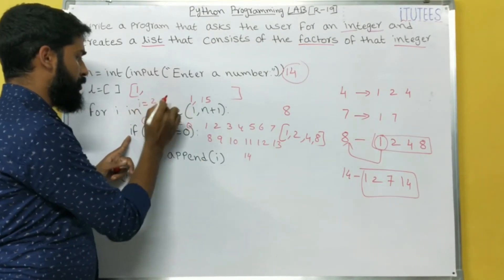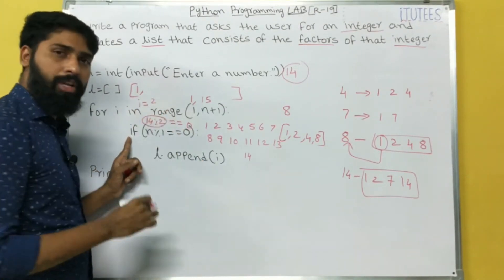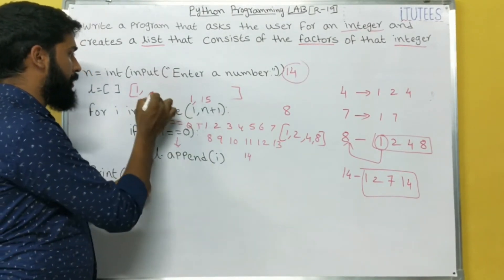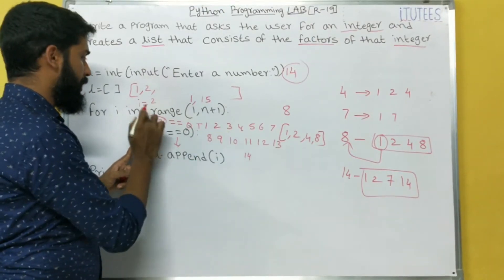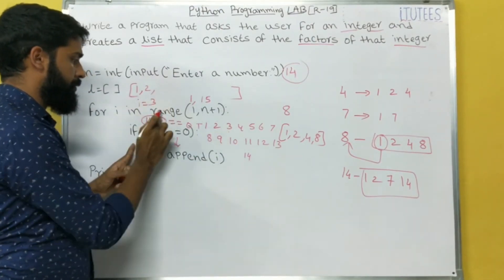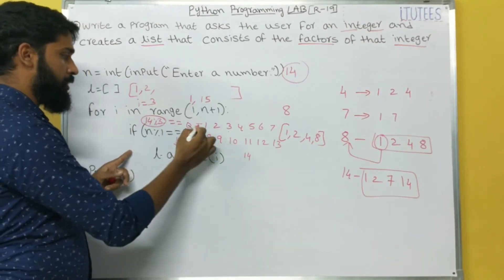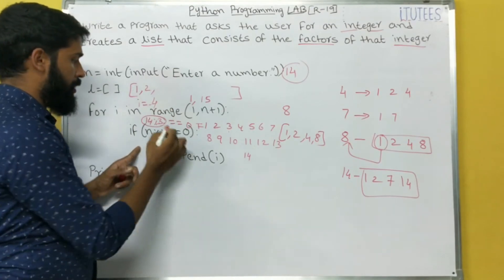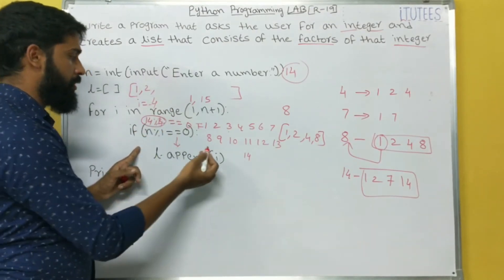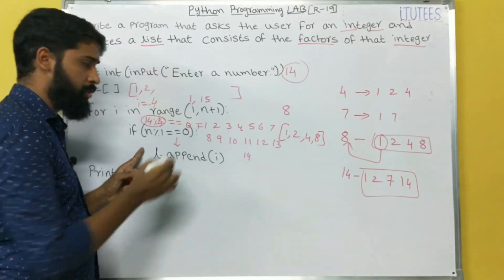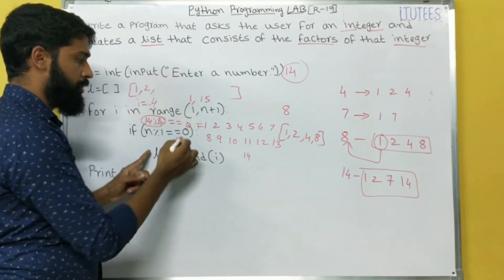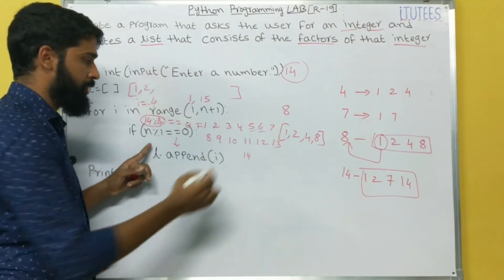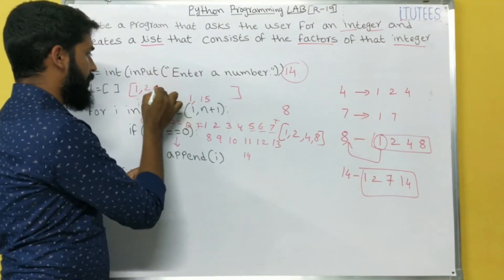Next iteration, i becomes 2. 14 percentage 2 also equals to 0. It is true. So l dot append, that means 2. Next iteration, i becomes 3. 14 percentage 3, false. So increment next. Now i becomes 4. 14 percentage 4, not. 14 percentage 4 equals to 0, false. So you don't enter. Next. For 5, false. For 6, false. For 7, it is true. So 7 is appended here.